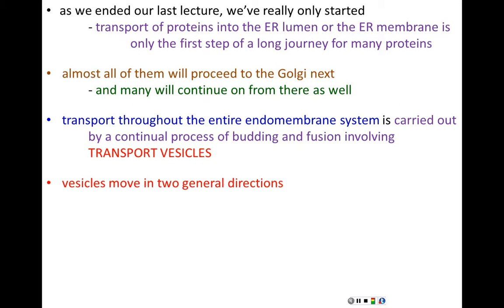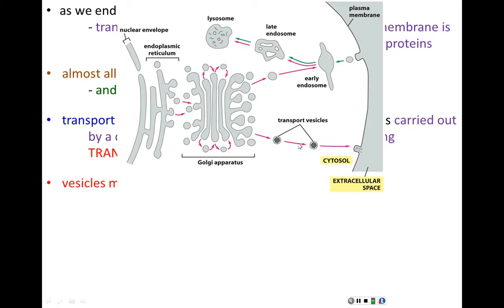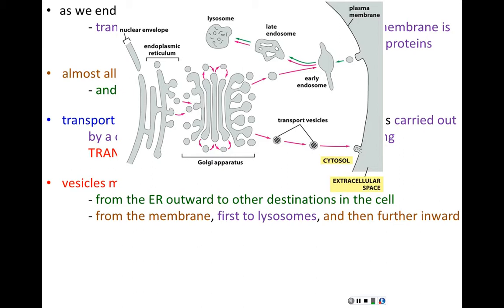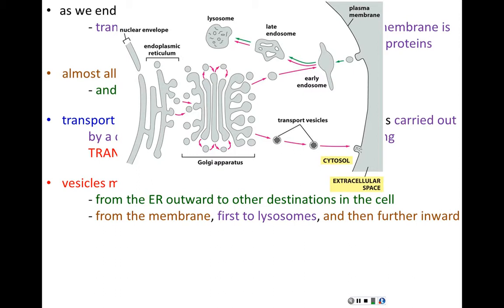Transport vesicles are membrane-bound bubbles that contain cargo within them. These vesicles move in two general directions: from the ER to the Golgi and then beyond to either other cellular regions or the cell membrane, or from the cell membrane inward, usually to lysosomes. When intaked molecules arrive at a lysosome and are digested, those building blocks — those nutrient molecules — are released to the rest of the cell.